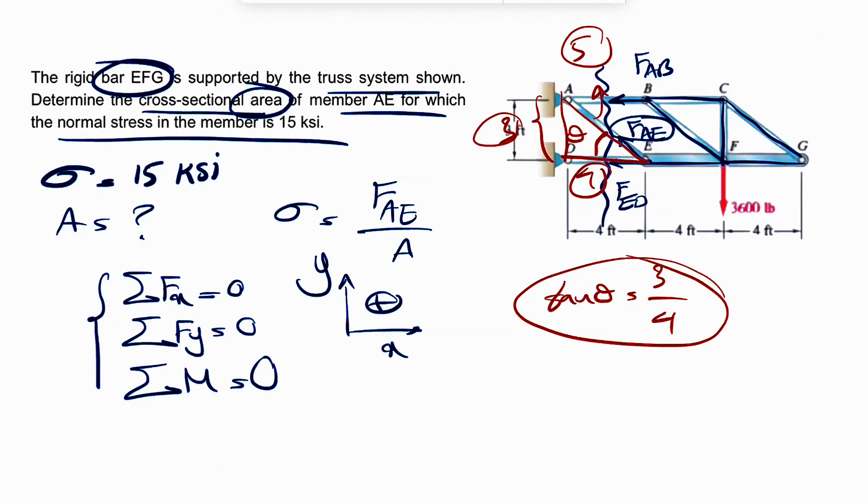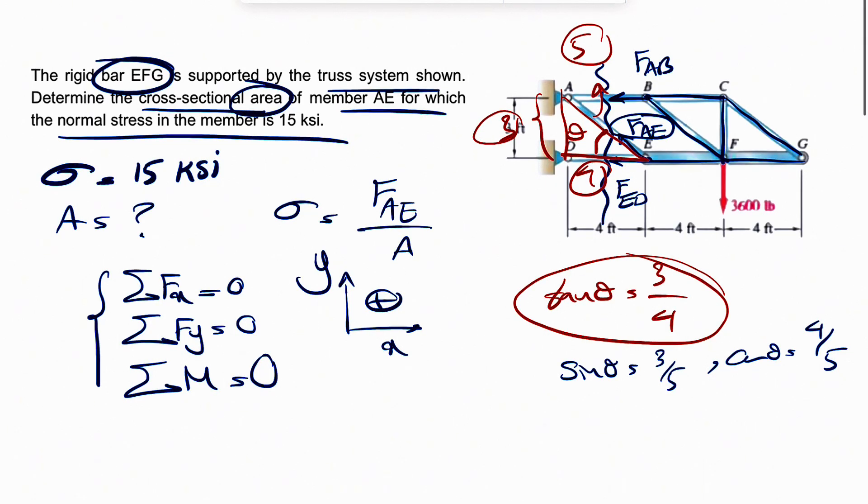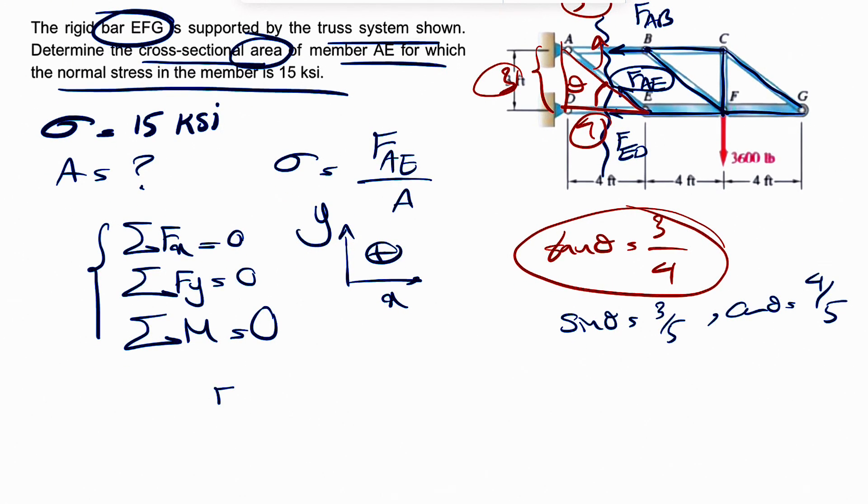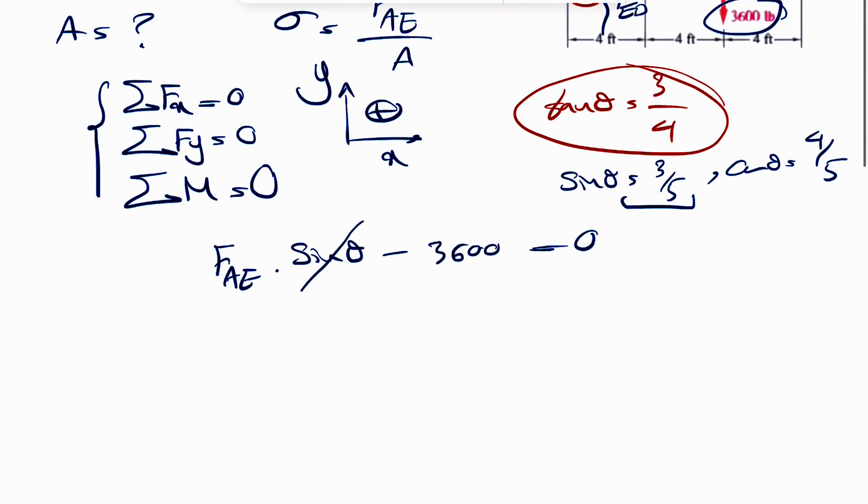And we don't even need to figure out the angle because we know the sine of theta would be the opposite over the hypotenuse, three over five, and cosine of theta would be the adjacent four over five. So now we're interested in the Y component of FAE, which is FAE sine of theta, and we're going to have this force minus 3600 pounds equals zero. Sine of theta we figured is three over five.